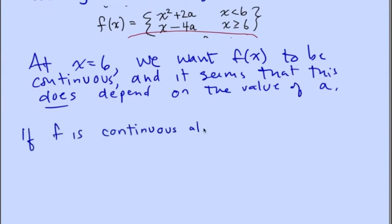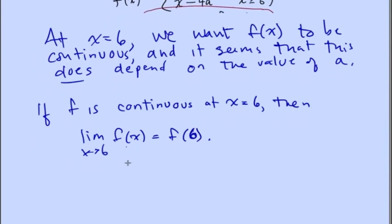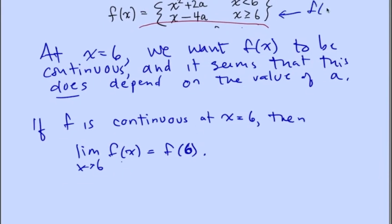If f is continuous at x equals 6, then this equation will be true: the limit as x goes to 6 of f(x) equals f(6). The value of f(6) can be found to be 6 minus 4a.